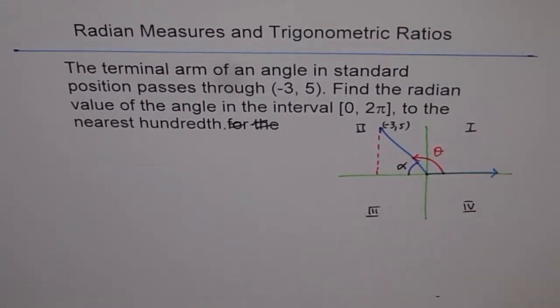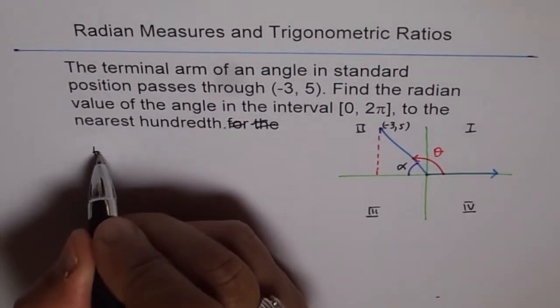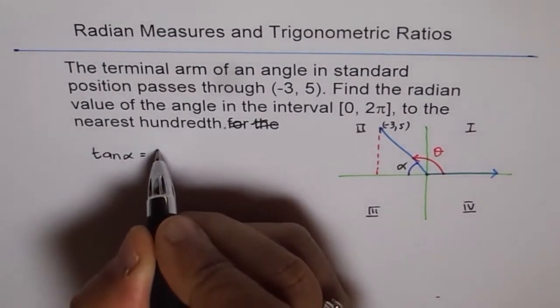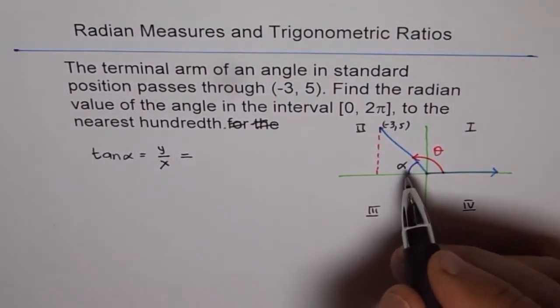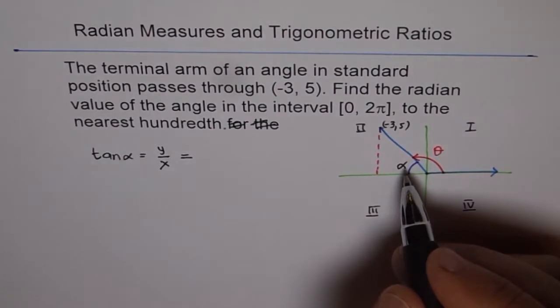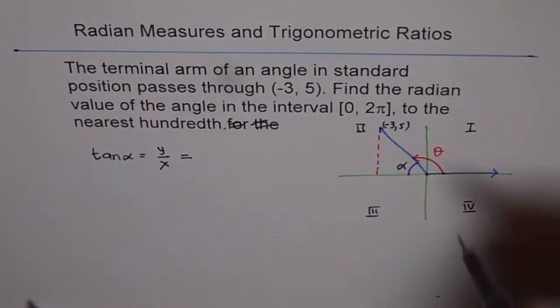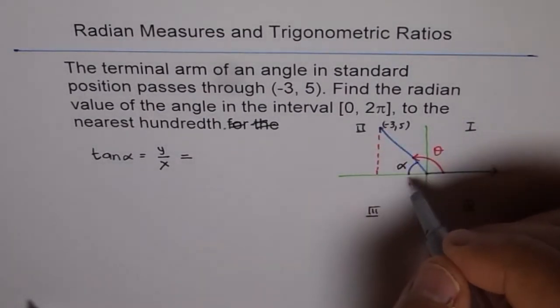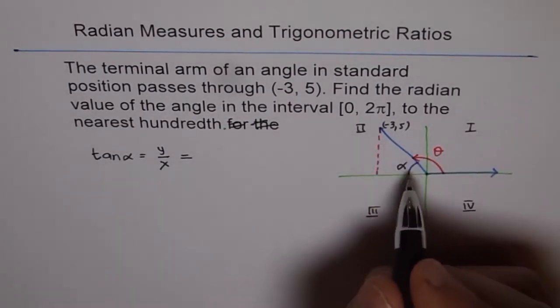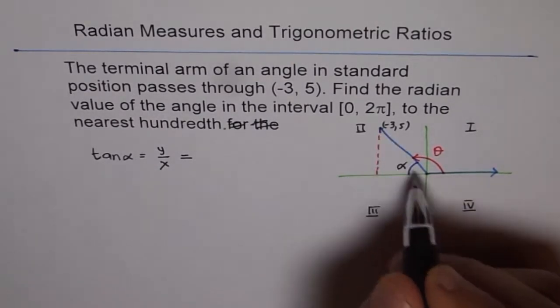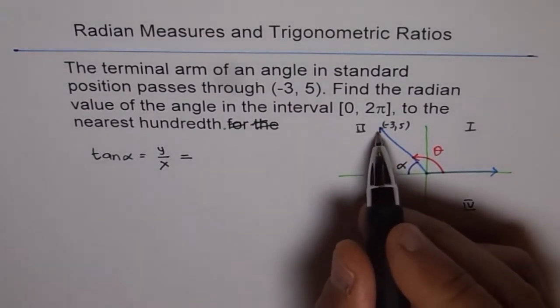To find the related acute angle from a coordinate, the easiest way is to say tan alpha equals y over x, and don't bother about the sign. We consider this triangle in quadrant 1, as if this triangle is in quadrant 1. Think of it as an independent triangle with adjacent side as 3, while this is minus 3, and the opposite side is 5.